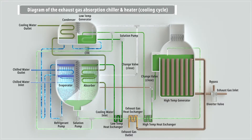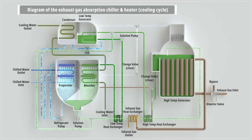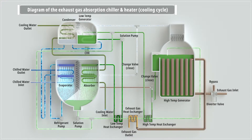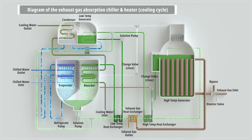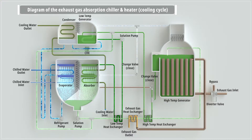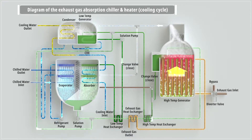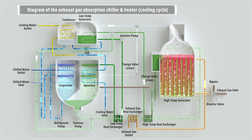Refrigerant vapor goes through the low temperature generator and condenser to be condensed and returned to the generator. The solution goes through the low temperature generator to release heat from the refrigerant again, becoming a concentrated solution flowing to the absorber. By repeating this cycle, the system cools down the chilled water, which is then used for cooling.